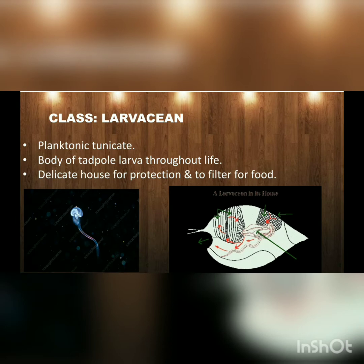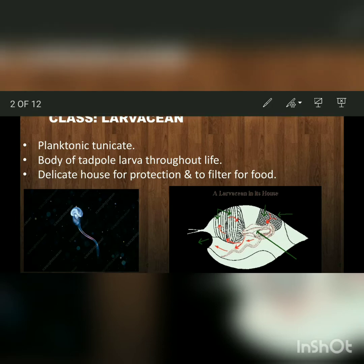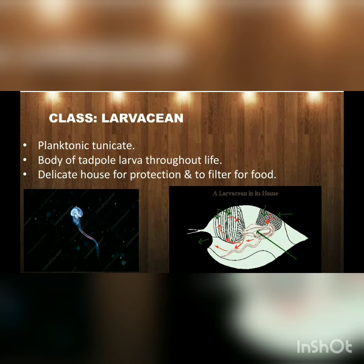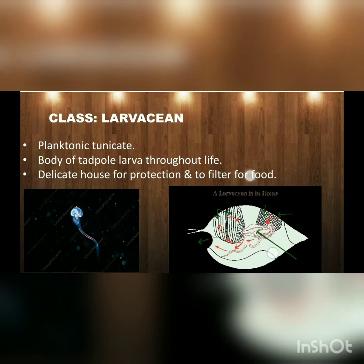This is the picture of a larvacean. It retains the body of a tadpole larva throughout life. It has a delicate house for protection and to filter for food. The house is a temporary, loose, non-cellular, and jelly-like envelope. This house can be frequently removed and renewed. The larvacean is seen within its house. The main function of the house is for protection and to filter for food. The house has inhalant and exhalant openings for the entry and exit of water.